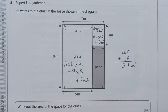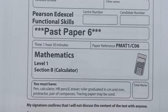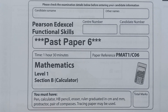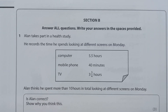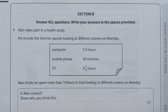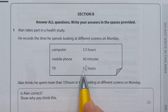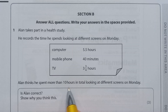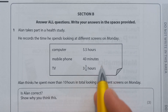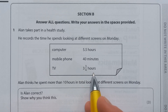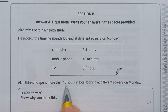That's the end of the non-calculator section. Now we're onto the calculator section. Question 1: Alan takes part in a health study. He records the time he spends looking at different screens on Monday — computer: 5.5 hours, mobile phone: 40 minutes, TV: three and three quarter hours. Alan thinks he spent more than 10 hours in total looking at different screens. Is Alan correct? We've got these all written in slightly different ways, so I'm going to convert them all to hours and minutes and then add them up.